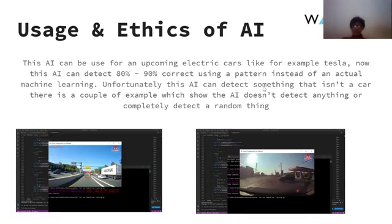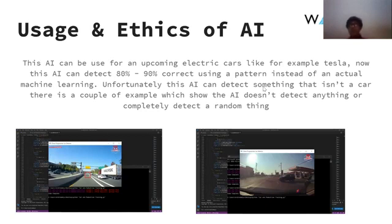The usage and ethics of this AI: it can be used for upcoming electric cars, like Tesla, as I mentioned. This AI can detect with about 80 to 90 percent accuracy, using a pattern-matching approach instead of actual machine learning. I actually didn't have enough resources and time to make the AI truly learn how to detect a car, but this is good enough — it's pretty close, although I do have a problem.